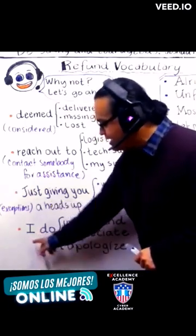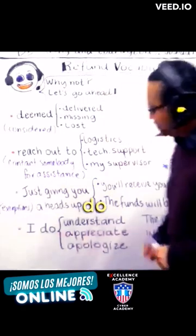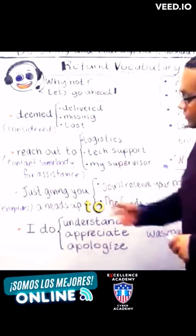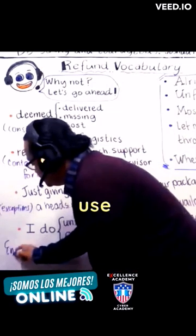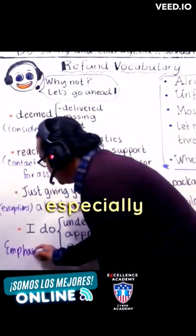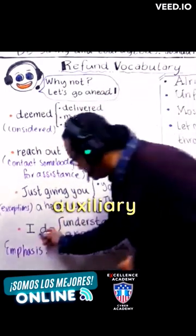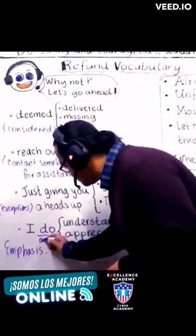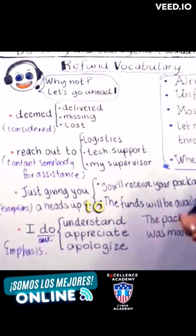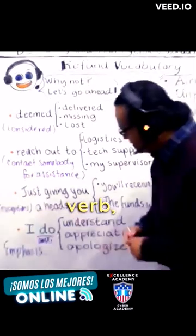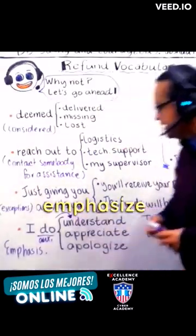We're going to use this structure: the subject plus the auxiliary verb — 'I do' — plus a verb, to emphasize. So for emphasis, we're going to use this particular structure, especially native speakers of English. They use this type of structure. They use the auxiliary verb to emphasize the verb, to emphasize the action, or to emphasize an idea.